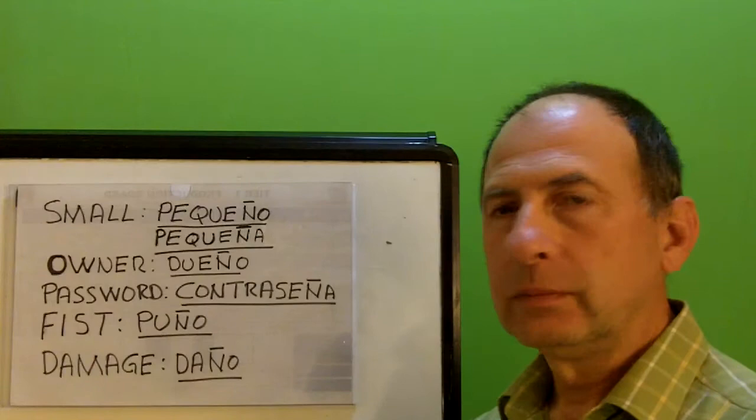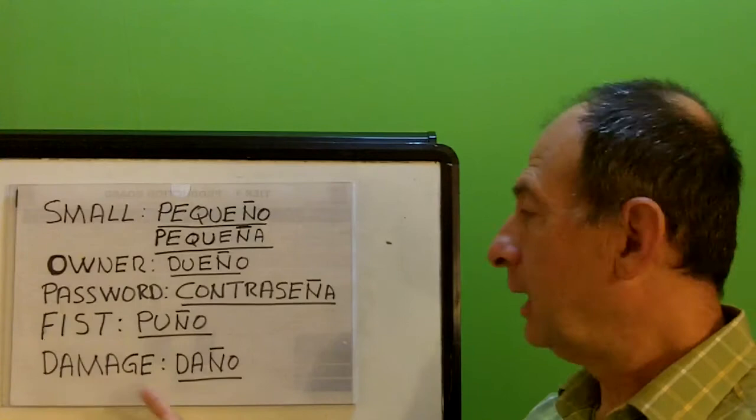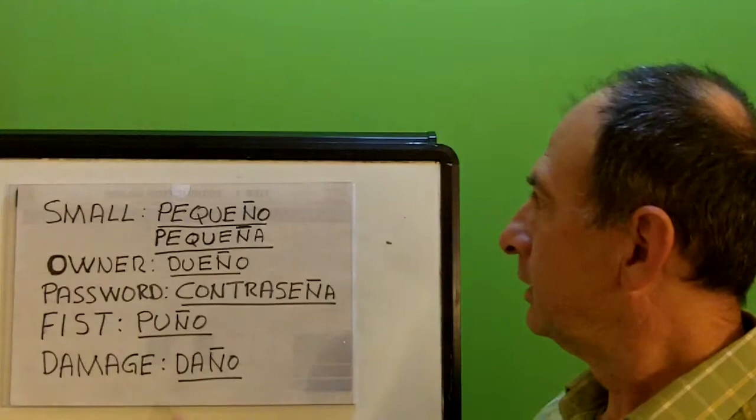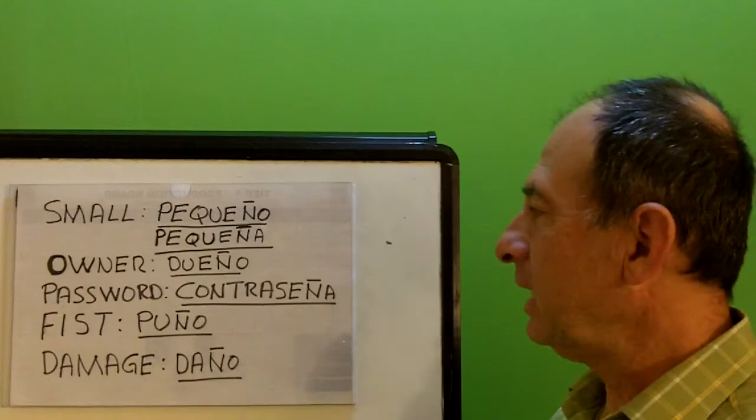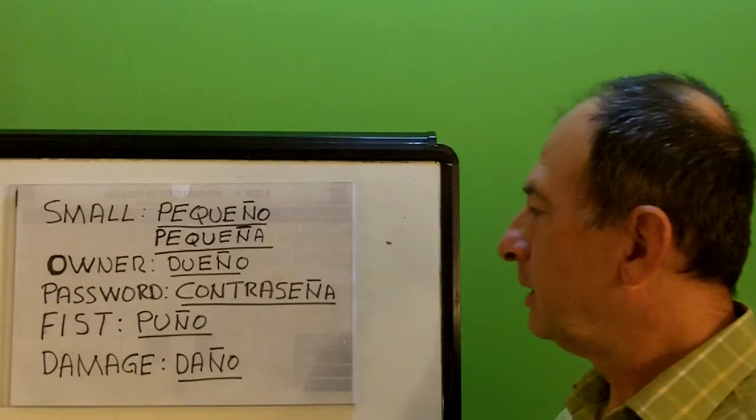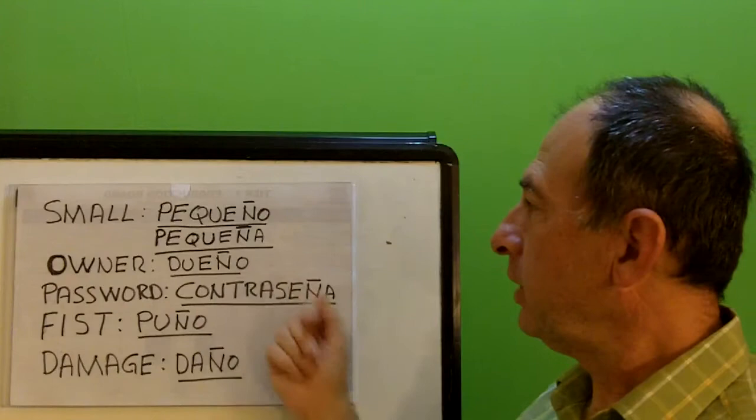Password is contraseña. Fist is puño. Damage is daño. Practice all of these: pequeño, pequeña, dueño, contraseña, puño, daño.